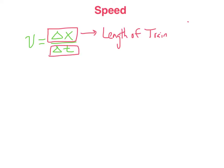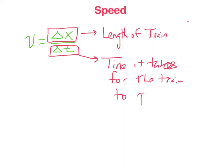Time — what's time going to be and how is that going to be relevant to this equation? If we know we have a roller coaster moving and we want to find how fast it's moving at the top, we're going to want to figure out how long it takes for that roller coaster to pass by that highest point, knowing that it's traveling at a pretty constant speed at the top. Time is the time it takes for the train to pass the highest point. We'll know the length of the train and how long it took to move, and thus we'll be able to find our velocity.